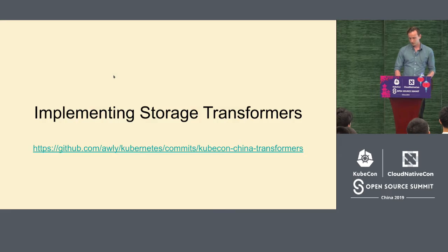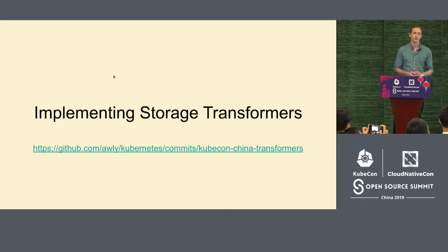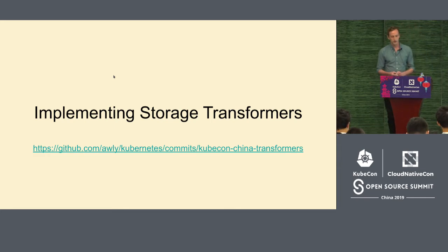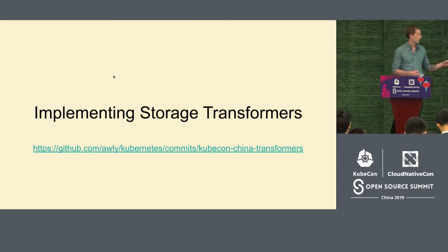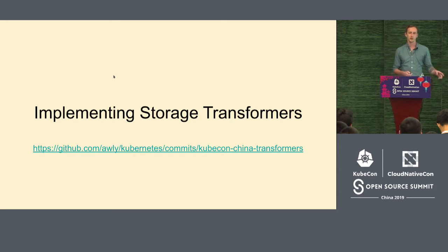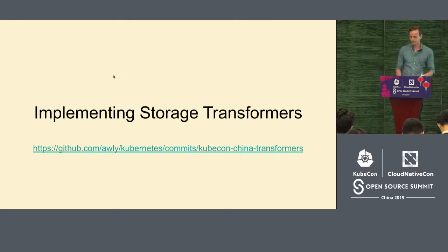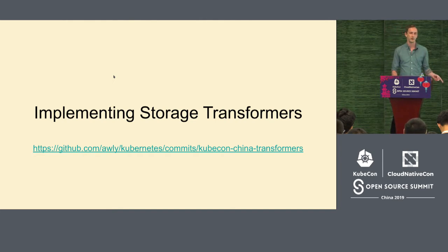Hopefully I've convinced you that encrypting secrets at rest is a useful thing to do. Now let's jump into the main section: how do you actually implement a transformer? I have a fork of Kubernetes where I built a transformer following exactly the same steps I'm going to show you. The steps in the slides are more abstract with code snippets for demonstration purposes, but on this fork I implemented a transformer that does SM4 encryption at rest.